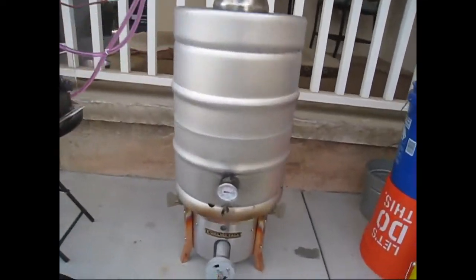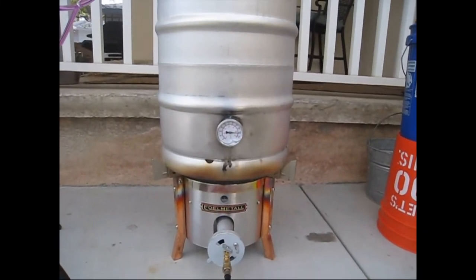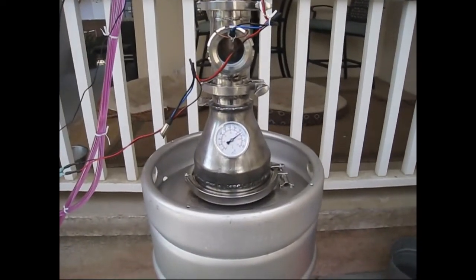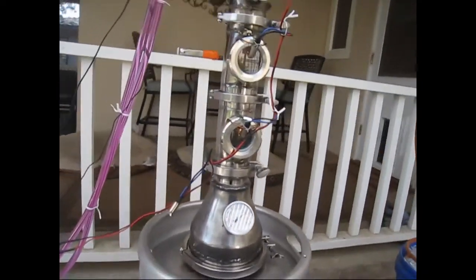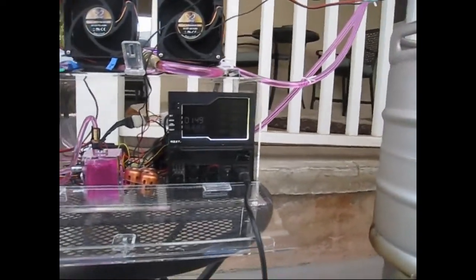Got about 220 degrees in the bottom of the keg, about 190 at the reducer, and according to this, about 186 at the top of the column.